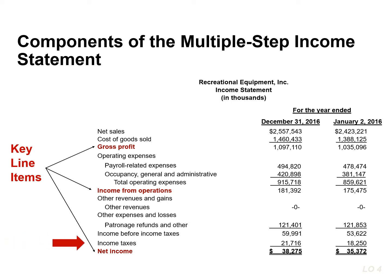Companies report income tax expense as a separate line item in the income statement before net income. The net income is the same under either a single-step or multiple-step income statement. The two income statements differ in the amount of detail displayed and the order presented. We will discuss each of the components of a multiple-step income statement in detail.